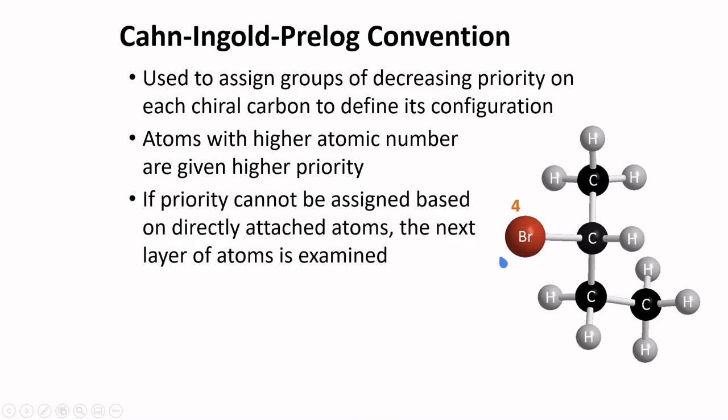If priority cannot be assigned based on directly attached atoms, the next layer of atoms is examined. Here, we have two carbons attached to the chirality center. Since these two atoms are identical, we need to examine the next layer of atoms. Here, the next atom is carbon, while on the other side, you only have hydrogens. Thus, the next priority is given for ethyl group, followed by the methyl group. The last priority is given to hydrogen.